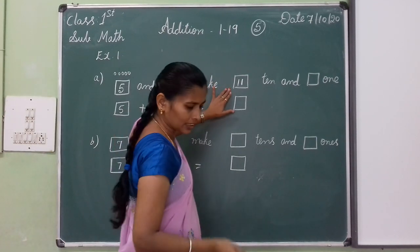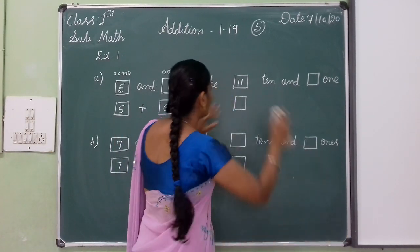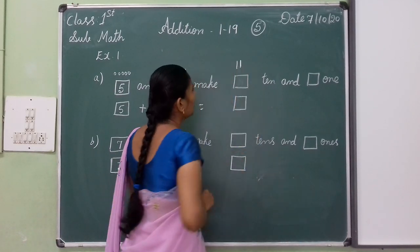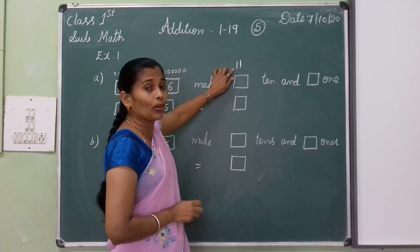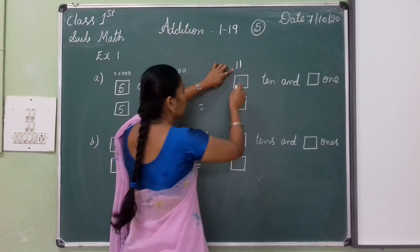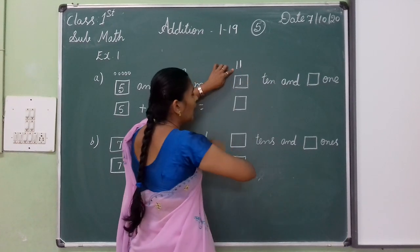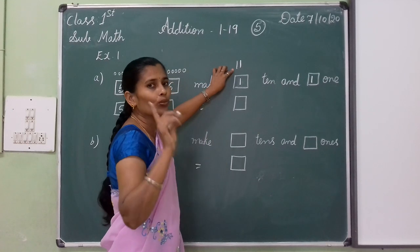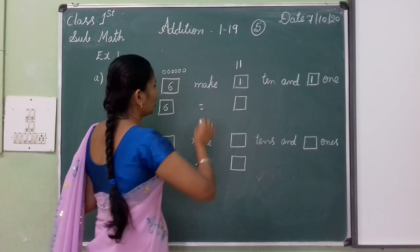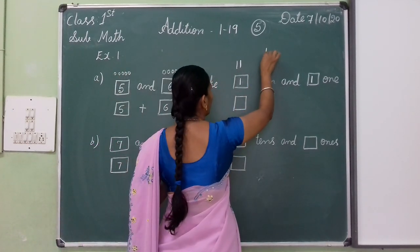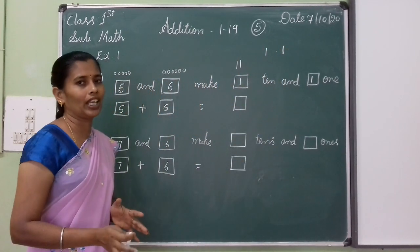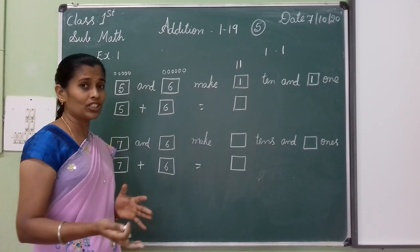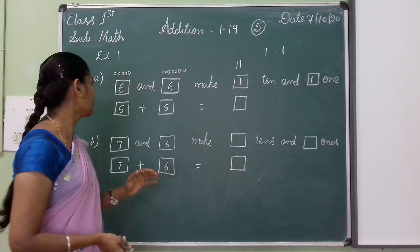Here, how many tens and how many ones are in 11? Here only one 10 and one 1. One ten and one 1 makes 11. One ten and 2 ones makes 12. One ten and 3 ones makes 13.